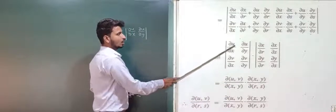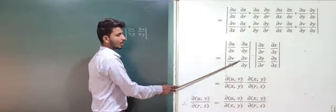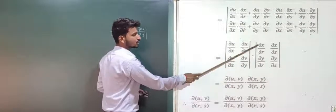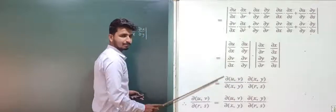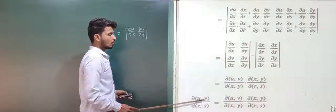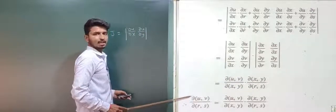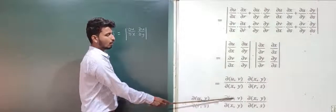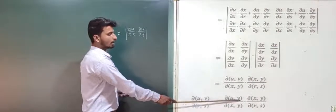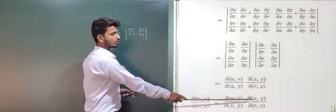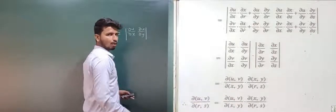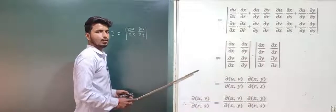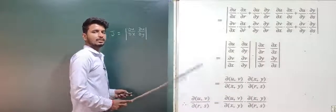Since u and v are functions of x and y, and x and y are functions of r and s, we have proved that ∂(u,v)/∂(r,s) = ∂(u,v)/∂(x,y) × ∂(x,y)/∂(r,s). Hence LHS equals RHS, and property 1 is proved.